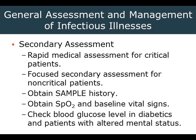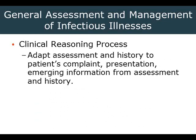Our secondary assessments involve a rapid medical assessment for critical patients, and a focused secondary assessment for non-critical patients. Obtain a SAMPLE history, SpO2, and vital signs. If altered mental status is present and the patient may be diabetic, check their blood sugar. Apply clinical reasoning — adapt the assessment and history to that patient's complaint. That's why it's important to study these different diseases, so we know what questions to ask. If they're complaining of right upper quadrant pain with slight yellowing, ask about urine color, stool color, and recent weight loss.